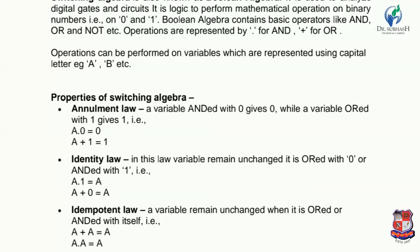The variable keeps its own identity as it is. Next is the Idempotent Law, where a variable remains unchanged when it is OR-ed or AND-ed with itself. When an operation is performed with the same variable, it is known as the Idempotent Law. For example: a PLUS a = a. If a = 0, then 0 + 0 = 0; if a = 1, then 1 + 1 = 1. Also, a INTO a = a: if a = 0, then 0 INTO 0 = 0; if a = 1, then 1 INTO 1 = 1.